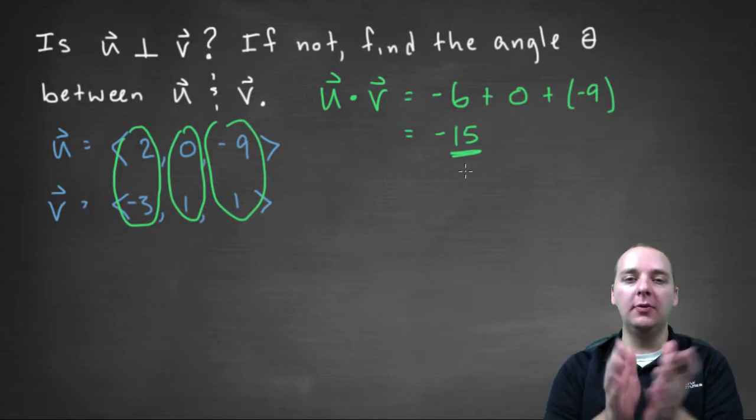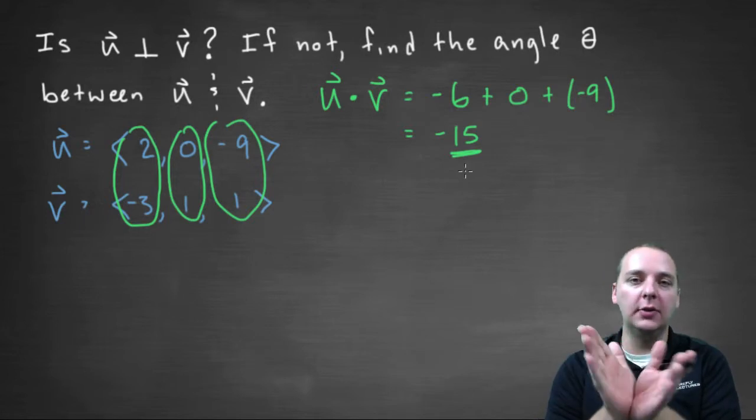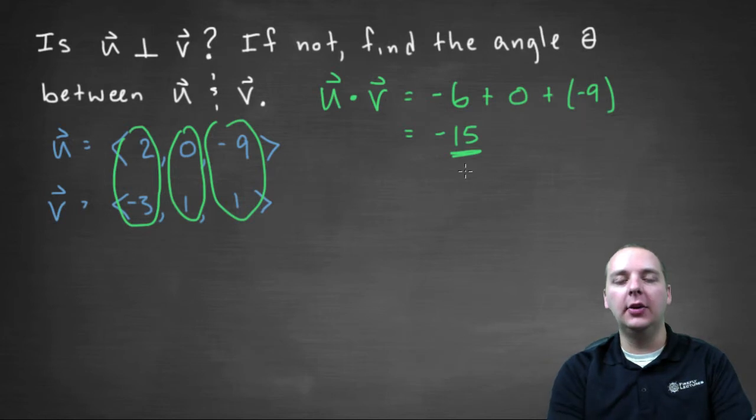which simply means that u and v don't meet at a right angle. It's some other angle other than ninety degrees.